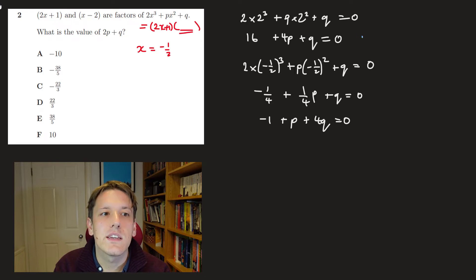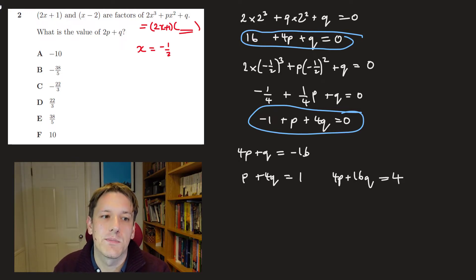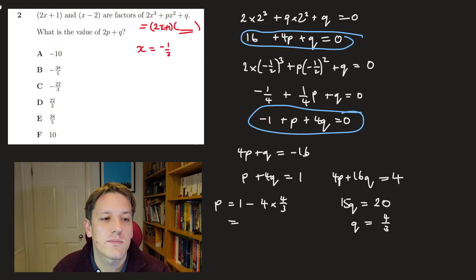So I've got these two simultaneous equations now for p and q, so I can just solve those to find p and q. So the first one is 4p + q equals -16, and the second one is p + 4q equals 1. So let's multiply the second one by 4 here and get 4p + 16q equals 4, and then subtract the first one from the second one, and that's going to give us 15q equals 4 minus minus 16, which is 20. So q equals 20 over 15, or 4 over 3. And then I can just go back here and say, well, that means p is 1 minus 4q. So that's 1 minus 4 times 4 thirds.